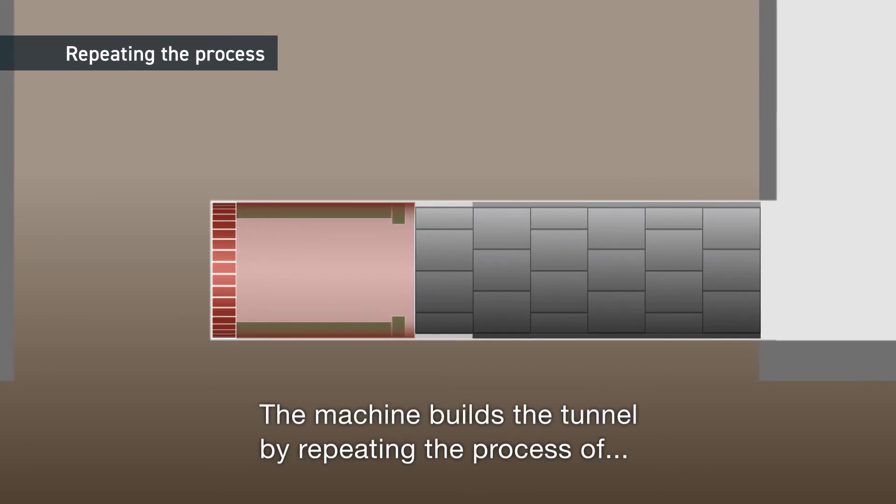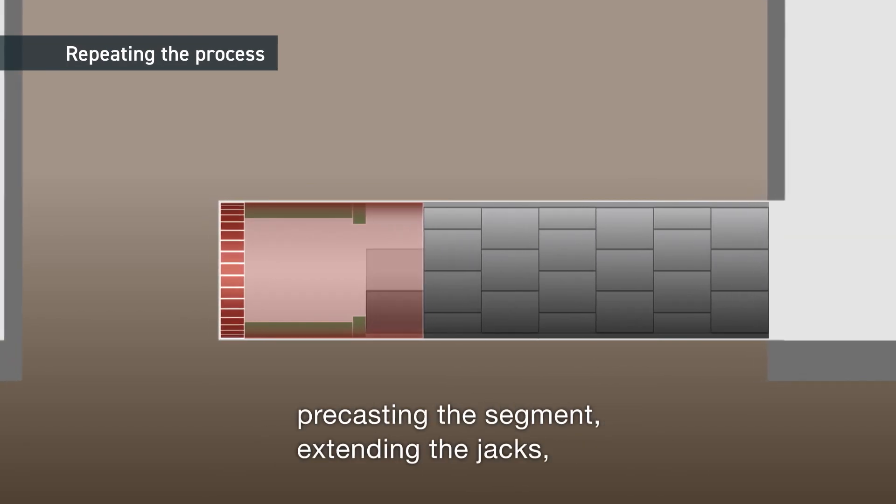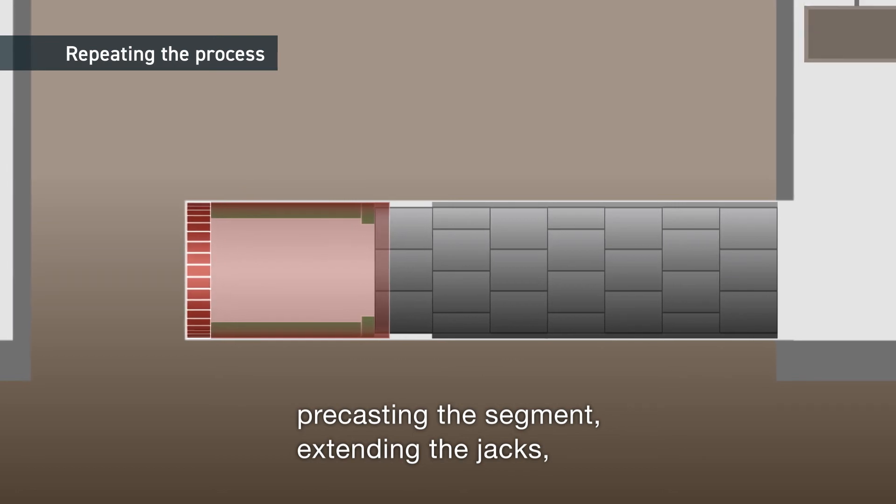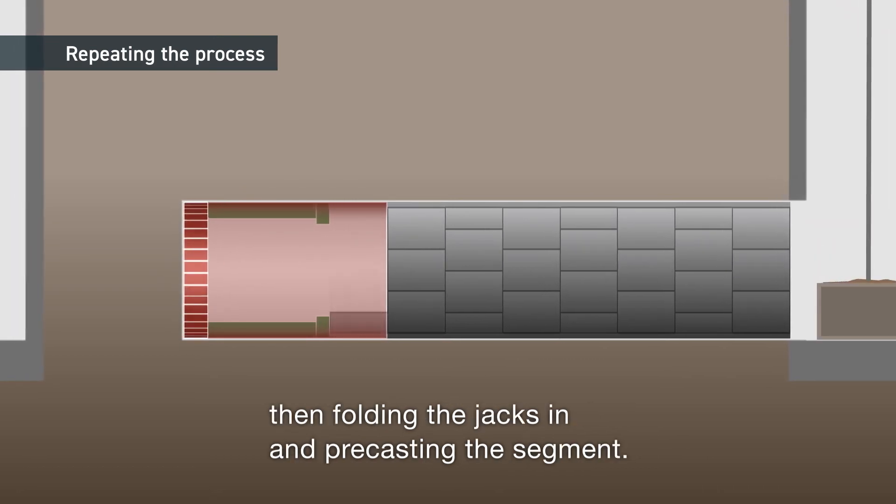The machine builds the tunnel by repeating the process of precasting the segment, extending the jacks, then folding the jacks in and precasting the segment.